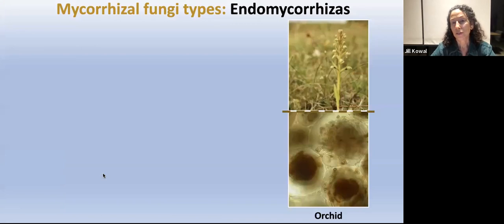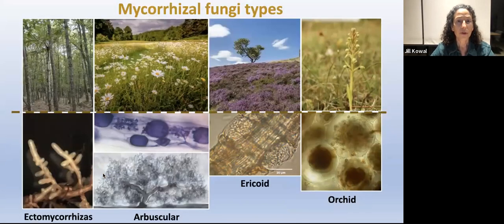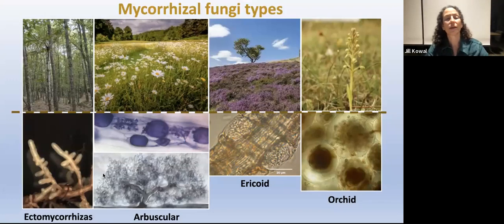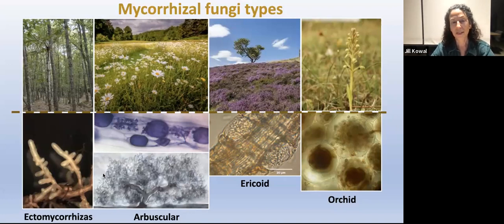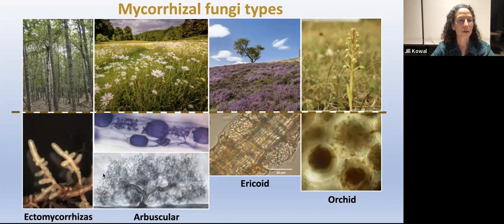The orchid mycorrhizas are specialized and have a very distinct morphology. They're essential for orchid seed germination and protocorm survival in many cases. If we pull all four groups together, we begin to have a community. In most semi-natural habitats, we have representations from all, if not at least two of these groups. Even in a woodland, we'll get occasional grasses and herbaceous plants, and heathlands may have a mix of arbuscular and ericoid, or ecto and arbuscular types.